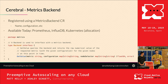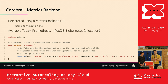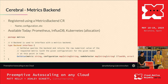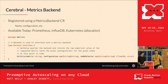The metrics backend also has a CR — just to register it with Cerebral. It has a name and configuration, which is how you talk to the metrics backend. For the Kubernetes metrics backend, there's no configuration since you're running in-cluster. Available today: Prometheus, InfluxDB, and Kubernetes (allocation-based). You can imagine a wide range of potential backends — they don't necessarily have to be metrics. You could look at an application-level queue and scale when queue depth reaches a threshold. It's a totally pluggable architecture.